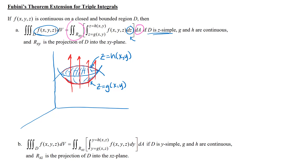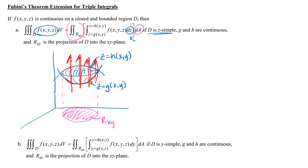The functions g and h need to be continuous. The region r-xy is the projection of D into the xy plane — the shadow of our three-dimensional region down into the xy plane. Just like with double integrals, once we set up that inner dz integral, we can collapse the region back and look at the xy region to set up the outer limits of integration using what we already know about double integrals.